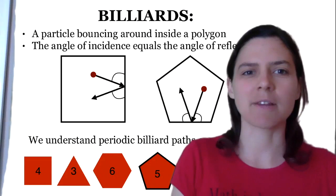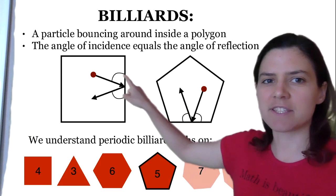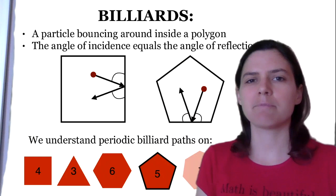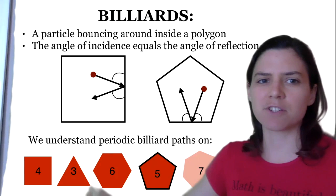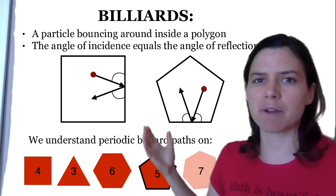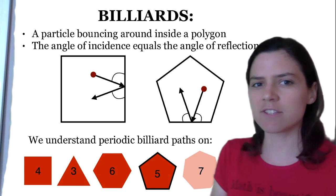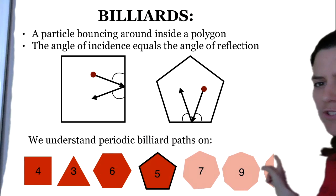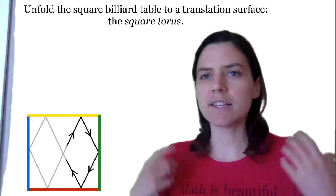So what am I going to talk about? I'm going to talk about billiards, which is a particle bouncing around inside a polygon so that the angle of incidence equals the angle of reflection, as in real life. Why study billiards on pentagons and other shapes? As humans we only understand periodic billiards on a few shapes: the square, the triangle, the hexagon — shapes that tile the plane by reflection across their edges. There are also two other special right triangles, and thanks to our work we now understand it on the Pentagon as well. I'll also show pictures on other polygons with seven, nine, and more sides.